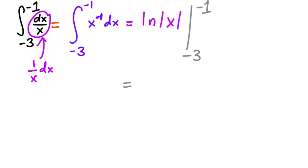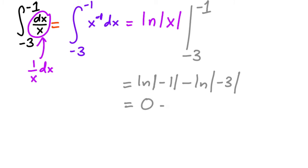You have natural log of the absolute value of negative 1 minus natural log of the absolute value of negative 3. The natural log of the absolute value of negative 1 is natural log of 1, which is 0. Minus natural log of 3, giving us negative natural log of 3.